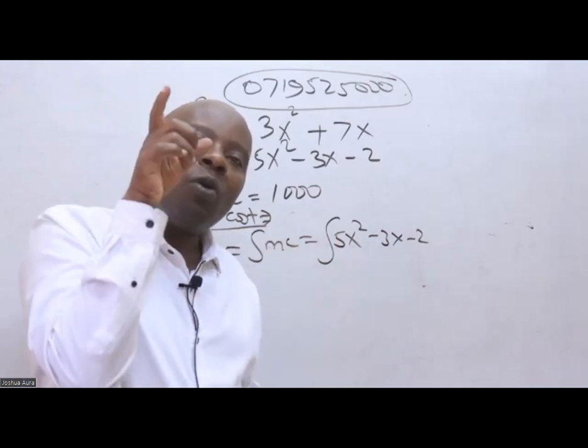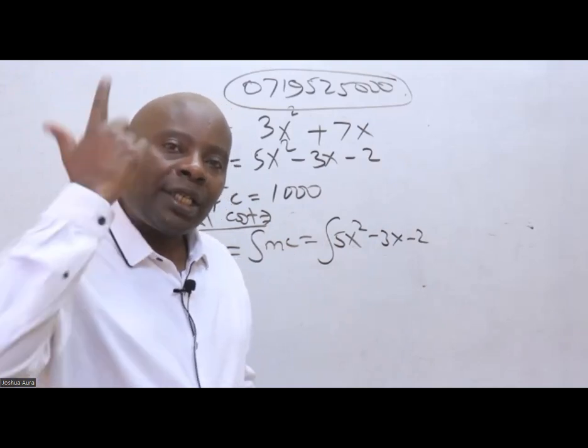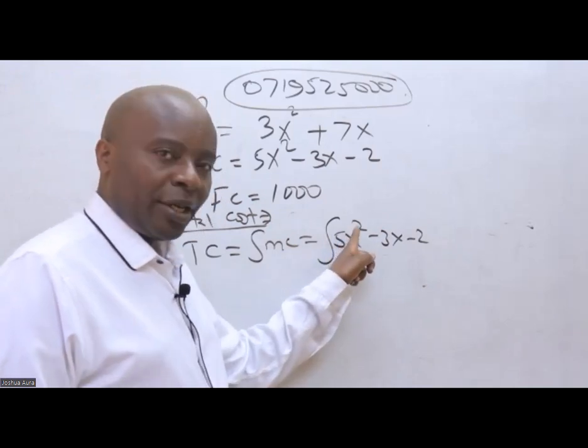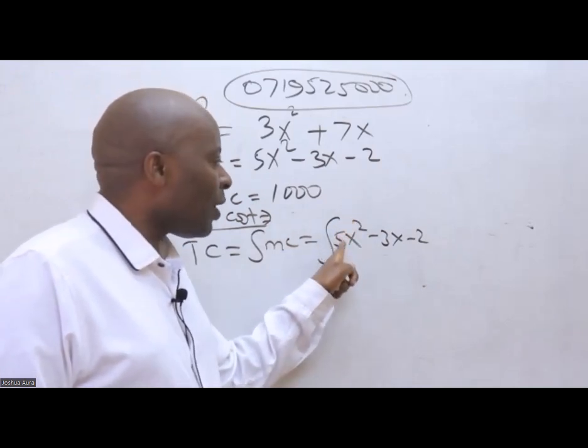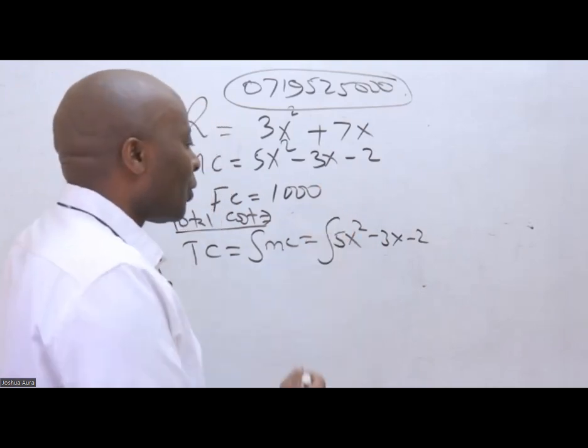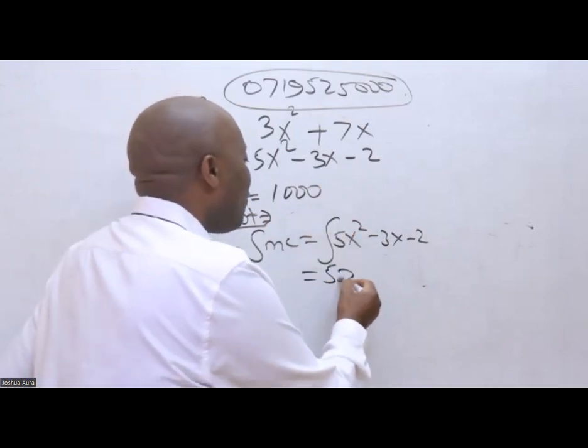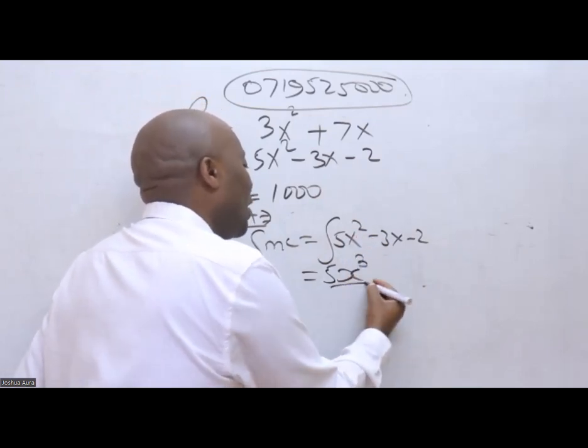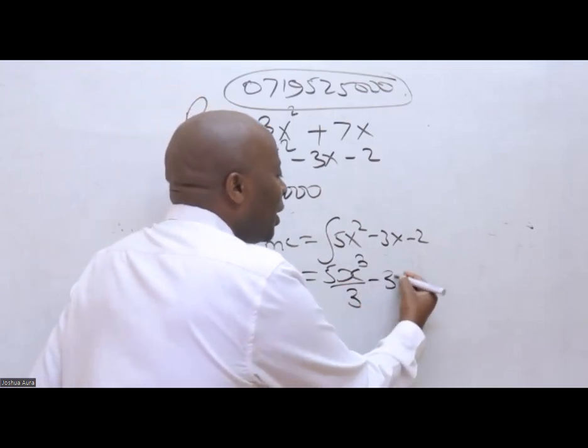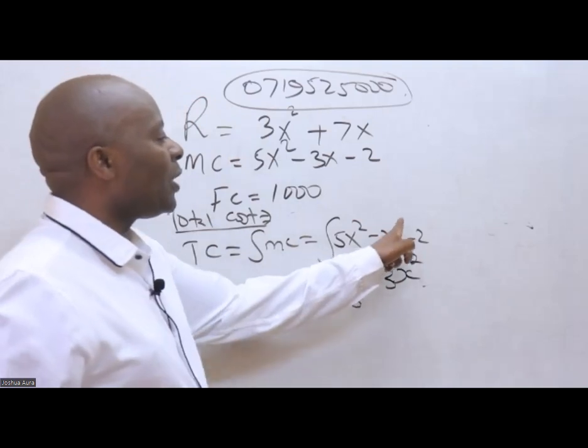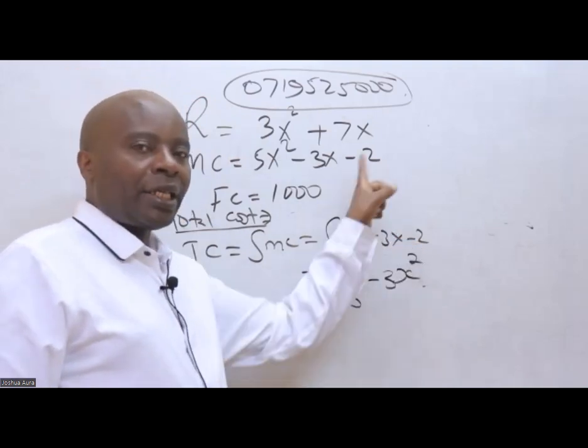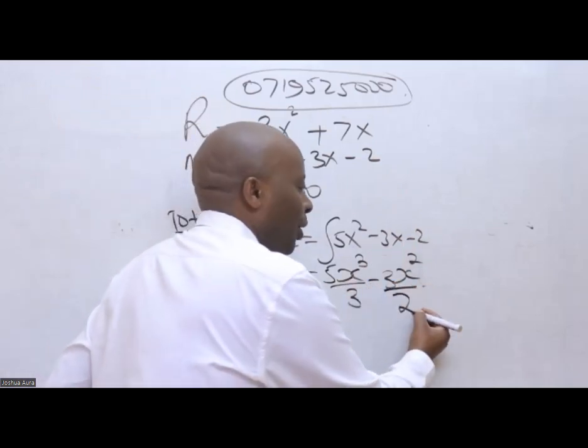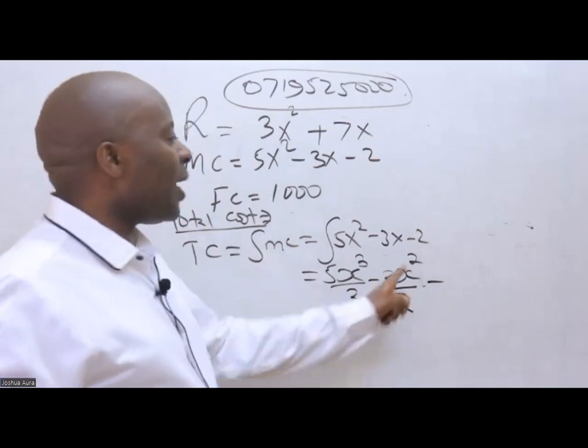Remember integration formula: you will increase the power by 1, and then you divide by the new power. So like this is 5x squared, increase the power by 1, this will give me 5x cubed divided by 3. So then this one will be 5x to the increased new power, which is 2 plus 1, that gives me 3, divided by the new power, which is 3. Minus 3x raised to power 2. Remember here, ordinarily there was a 1. When I increase it by 1, the new power will be 2. Divide this by the new power, which is 2.